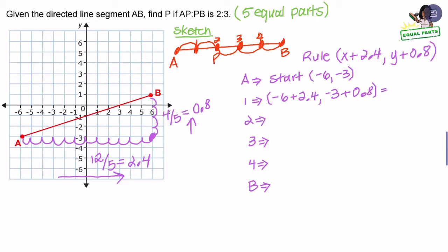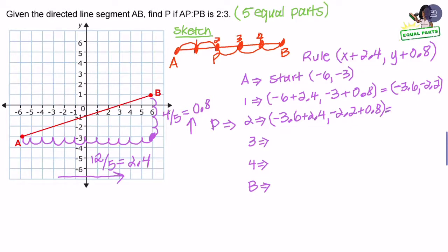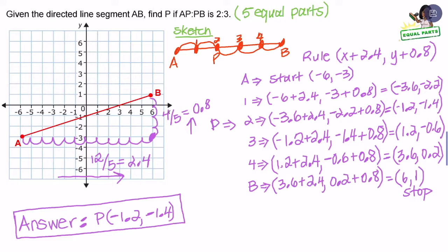Starting from the ordered pair negative six and negative three and applying the rule, the first ordered pair is negative 3.6 and negative 2.2. Point P is at the second location — applying the rule to the previous ordered pair gives us our final answer of negative 1.2 and negative 1.4. If you continue applying the rule to each of the ordered pairs, you will eventually end up at the stopping point, which is point B at six and one. The answer for partition P is at negative 1.2 and negative 1.4.